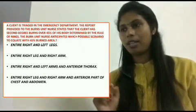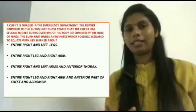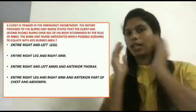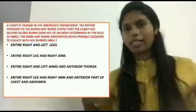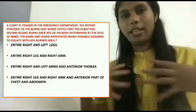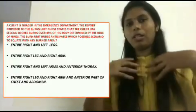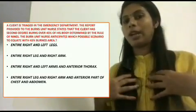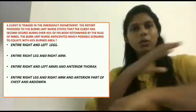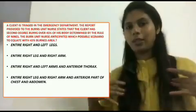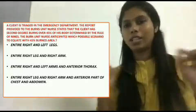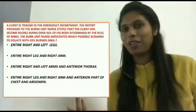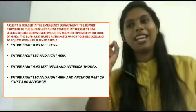The third option is entire right and left arms and anterior thorax. Right arm is 9 percent, left arm is 9 percent — total 18 percent. The anterior thorax is 9 percent. So 9 plus 9 plus 9 equals 27 percent. This does not match 45 percent either, so we eliminate this option as well. Only one option remains, so that must be the answer.